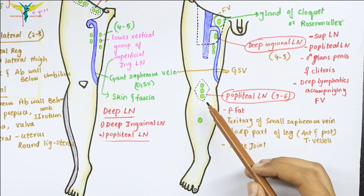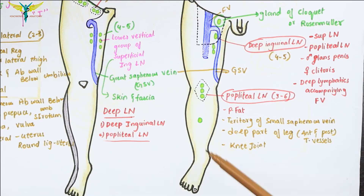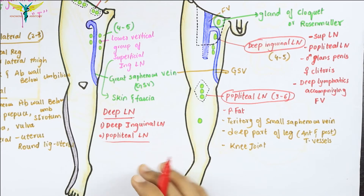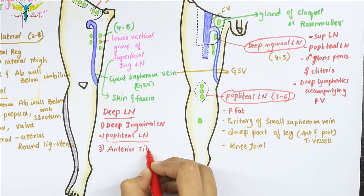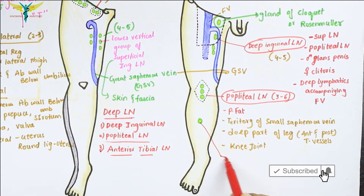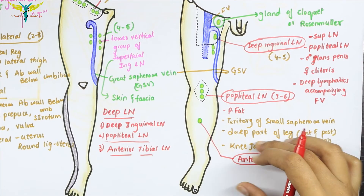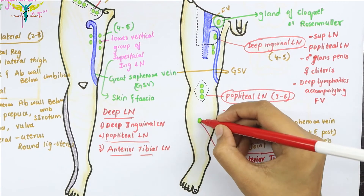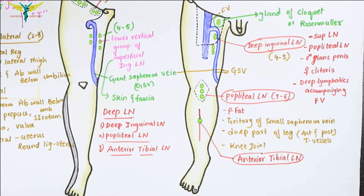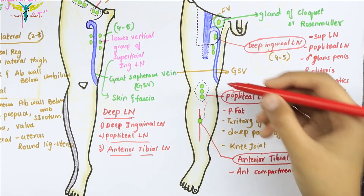The popliteal lymph nodes lie deeper and collect lymph from deeper structures like the knee joint, the deep part of the leg, and the territory of the small saphenous vein. Another group of lymph node is also present in the deep lymph nodes of the leg: the anterior tibial lymph node. This is an inconstant node found along the upper part of the anterior tibial artery. It receives lymph from the anterior compartment of the leg, and its efferents pass into the popliteal lymph nodes.